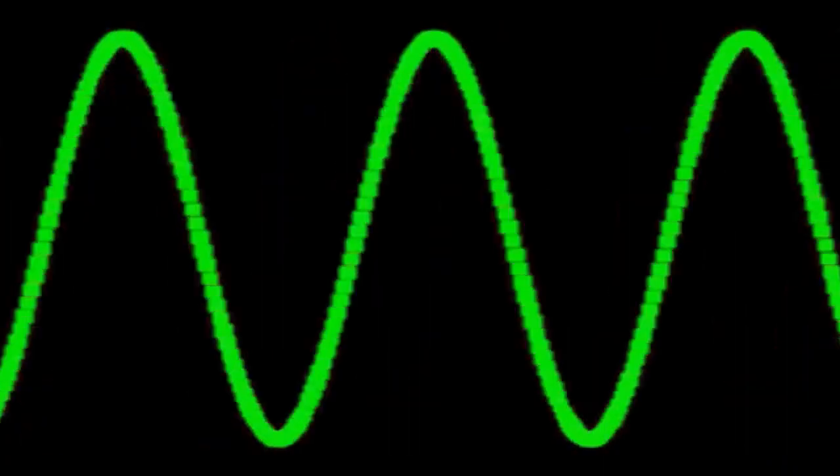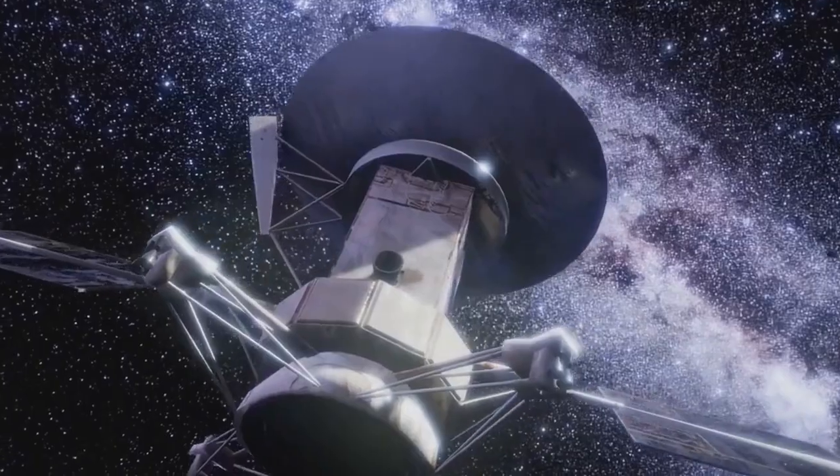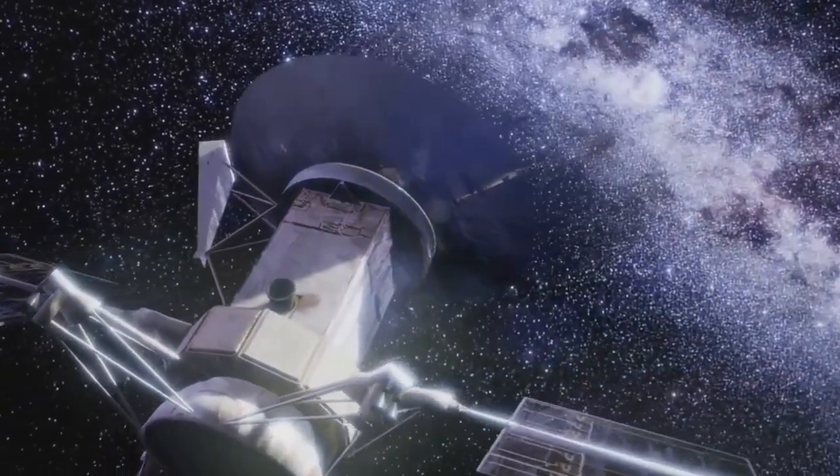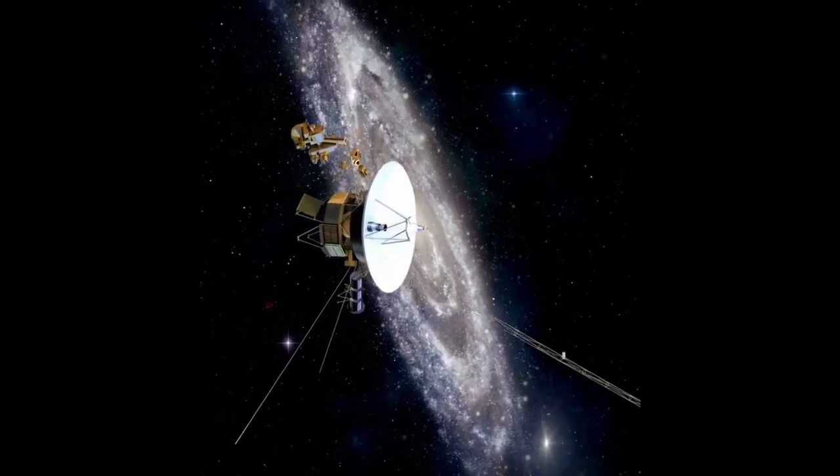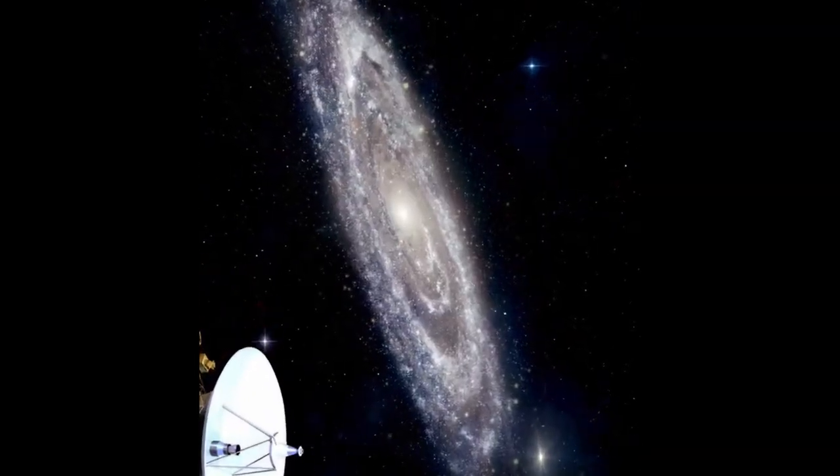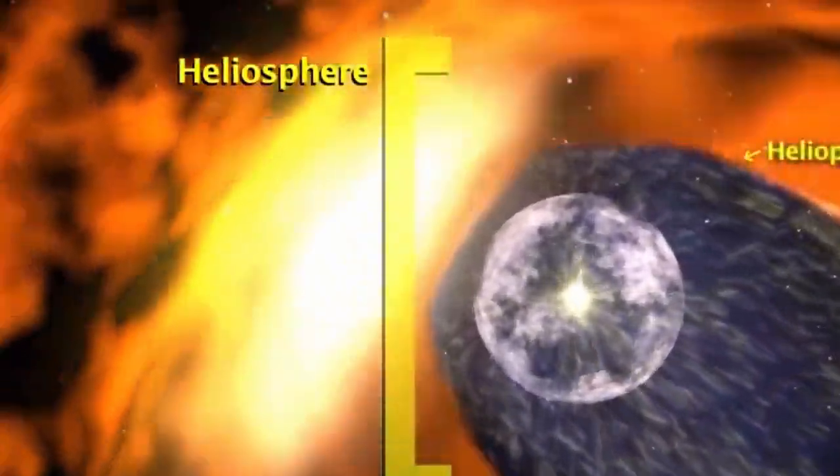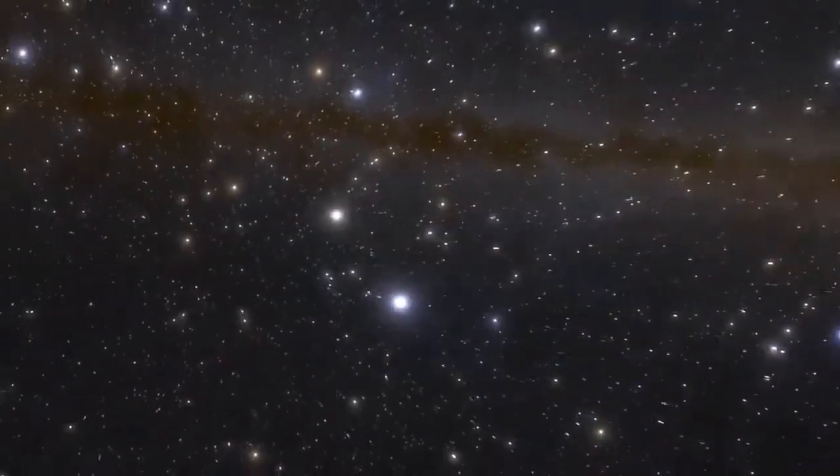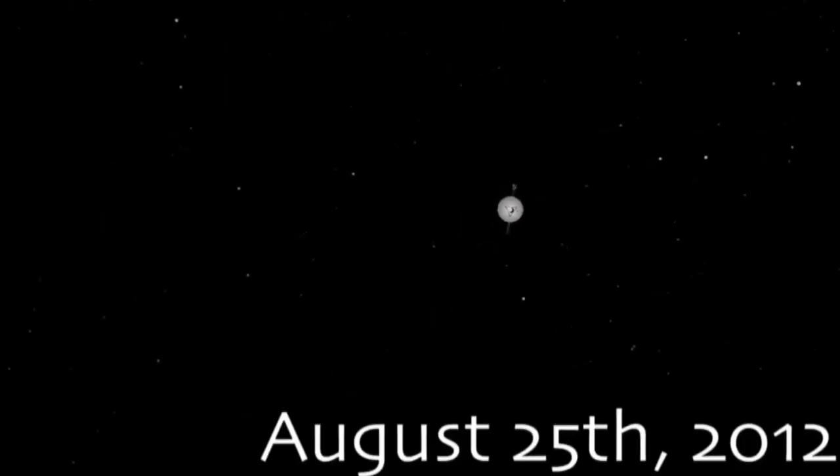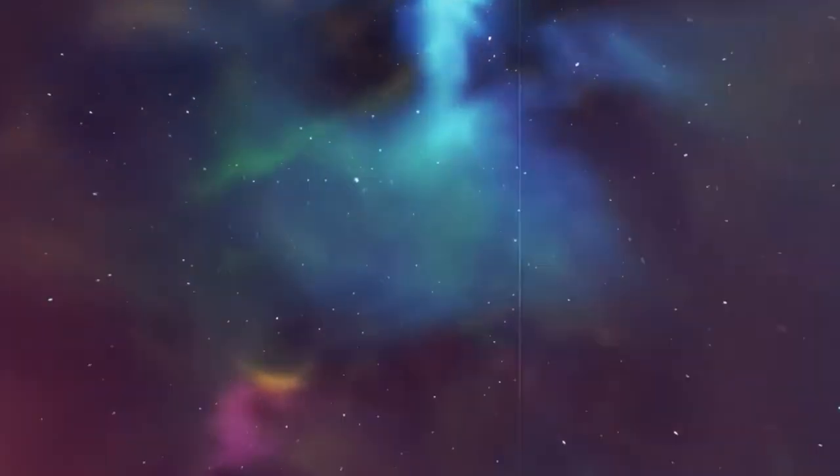The data they are now sending back from the edge of the solar system could provide insights into cosmic phenomena that were unimaginable when they were first launched. Voyager 1 crossed the heliopause, the boundary where the sun's influence wanes and the interstellar medium begins, in 2012, becoming the first human-made object to enter interstellar space.